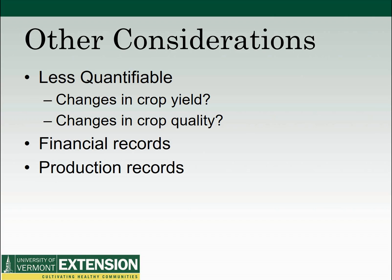In this example, we talked about things that were fairly quantifiable. Through online resources, we can look at field capacity of the tractors and implements to determine potential labor and machinery savings. Something that's less quantifiable is whether there could be changes in crop yield or crop quality. Hopefully, being more timely with planting, harvesting, and caring for the crops would lead to increased yields and quality. We should look at financial and production records to glean any information to make assumptions on increases in net income.